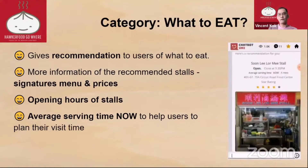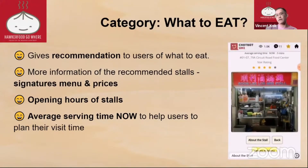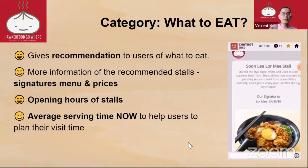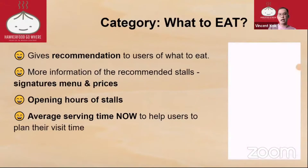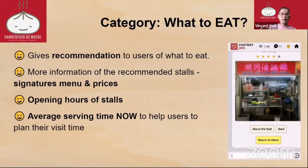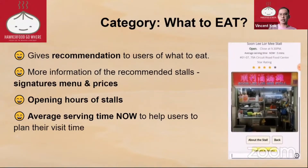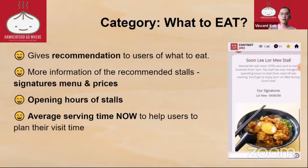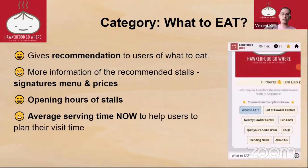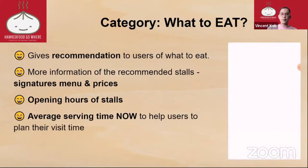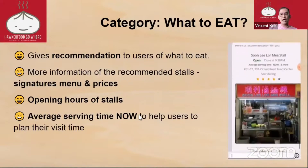For the 'What to Eat' feature, when you click on it you can choose what kind of food you want, the type of food, and then opening hours and average serving time are displayed. Right now it's hard-coded, but in future we plan to have IoT devices or maybe even an app so that when the hawker is open they can click on it, and that data is pulled to the chatbot so live information is reflected.